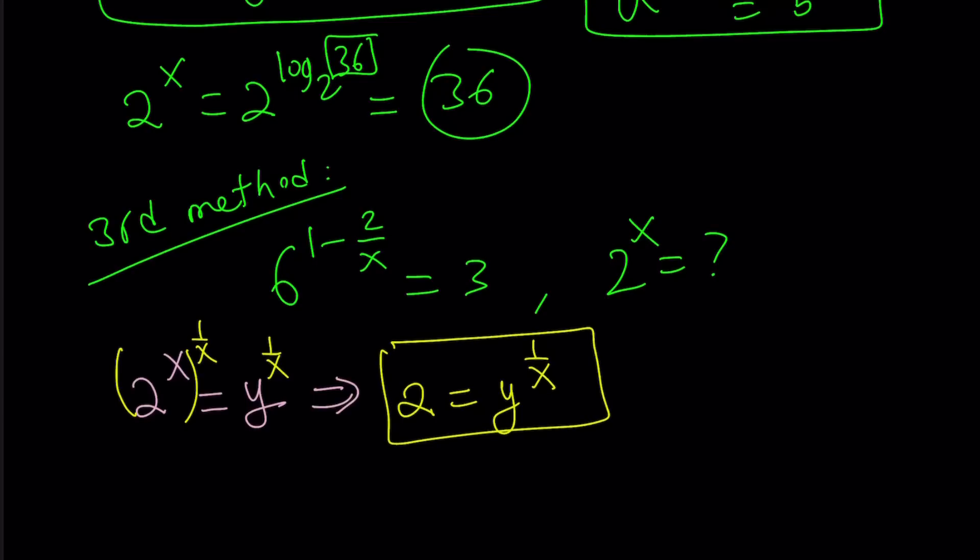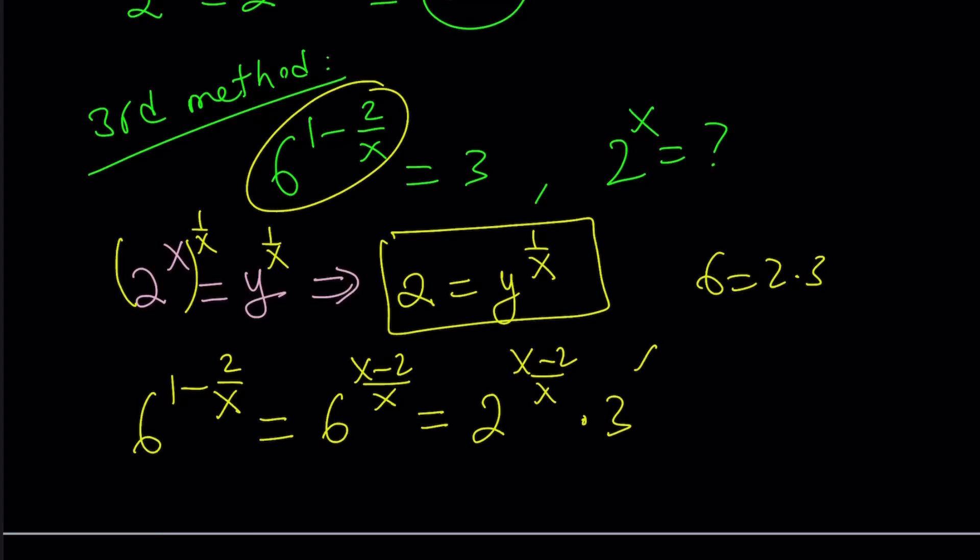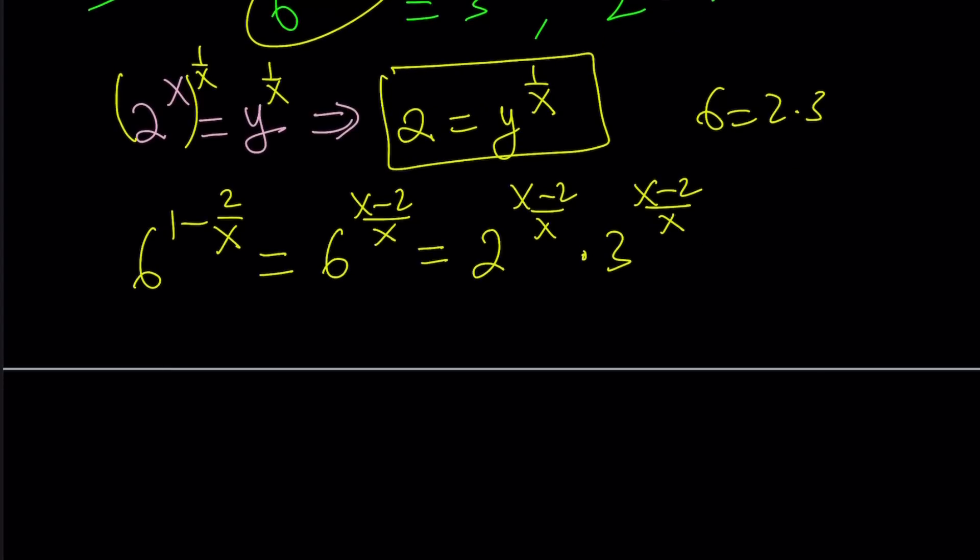But let's go ahead and work this out a little bit. So we're going to take this: 6 to the power 1 minus 2 over x. And I want to make a common denominator, 6 to the power x minus 2 over x. And now we can break it down. Since 6 can be written as 2 times 3, we can write 6 to the power x minus 2 over x as 2 to the power x minus 2 over x times 3 to the power x minus 2 over x. So I use the property that allows you to write a to the n times b to the n equals ab to the power n, or vice versa.